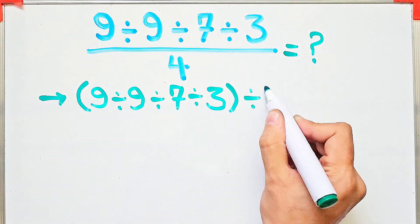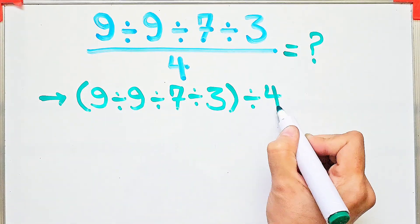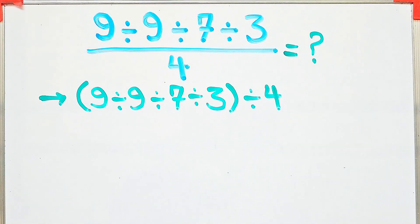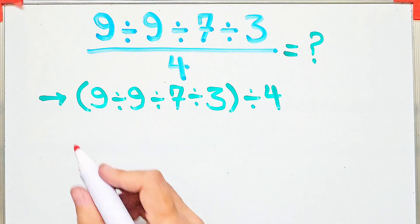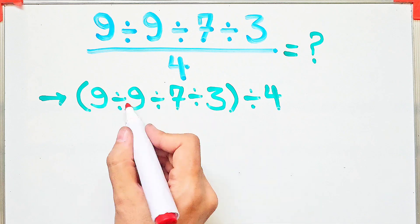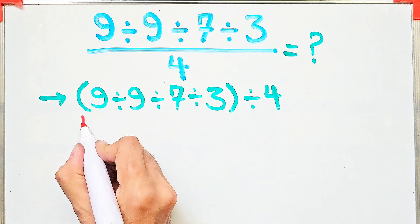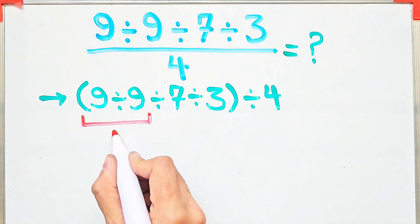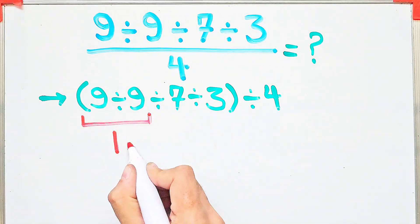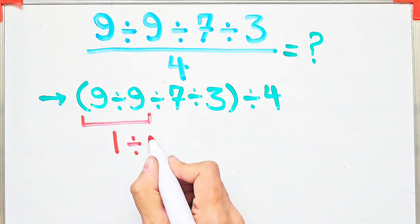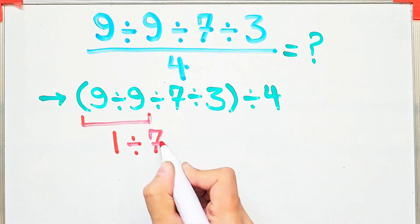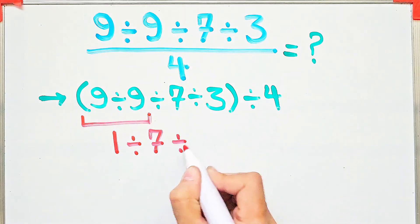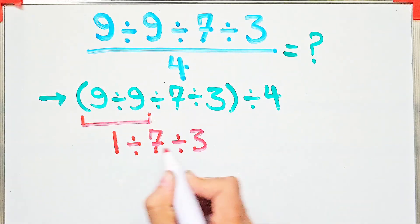First, we simplify inside the parentheses. 9 divided by 9 equals 1. Now we have 1 divided by 7, divided by 3, then divided by 4.